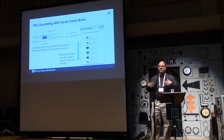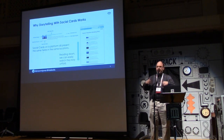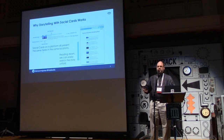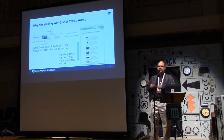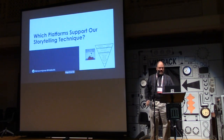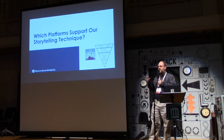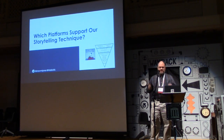Storytelling also works with social cards as a visualization technique. Social cards on a platform store the same information in the same location on every card, so if you list the cards in order, you can watch the story unfold. This particular example shows the Boston Marathon bombing — you can actually watch the story unfold through these 28 links, which came out of a collection of many more mementos. The question then becomes: which platforms support this technique of listing things in order?